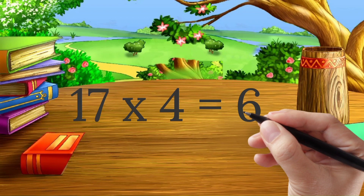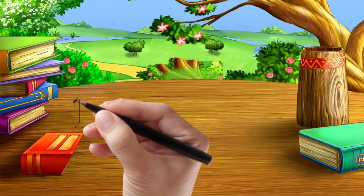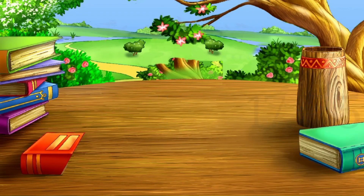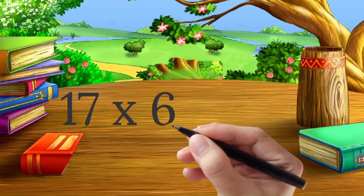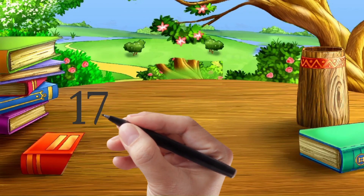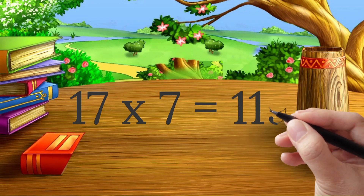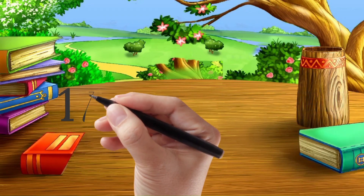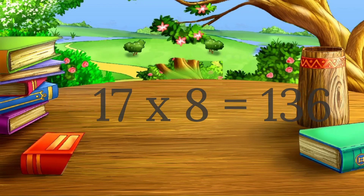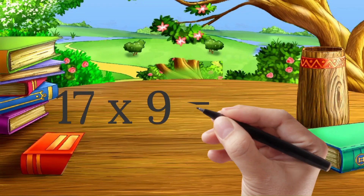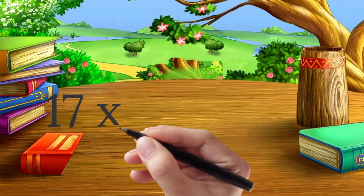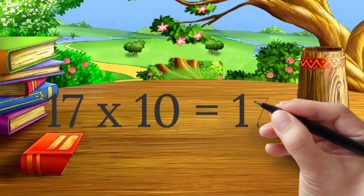17 four's are 68. 17 five's are 95. 17 six's are 102. 17 seven's are 119. 17 eight's are 136. 17 nine's are 153. 17 ten's are 170.